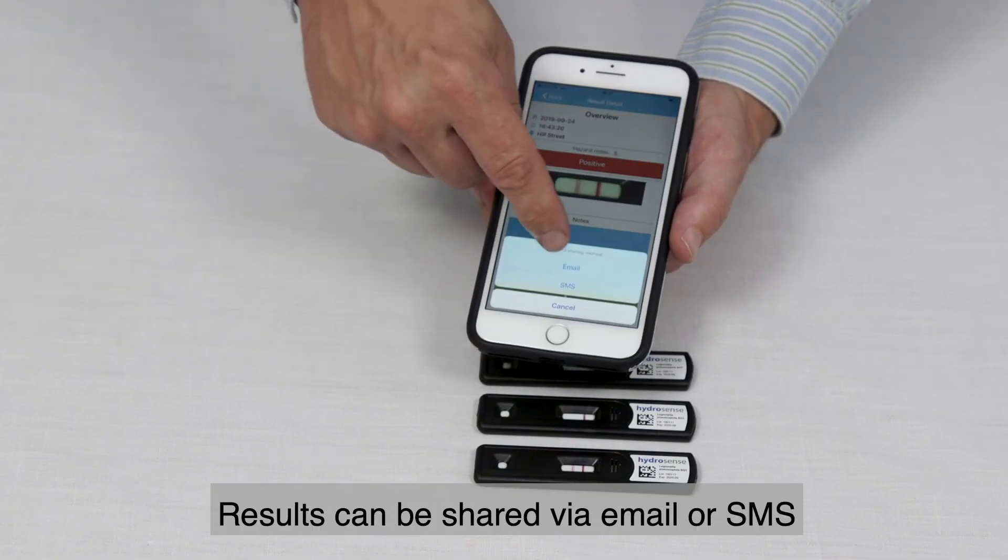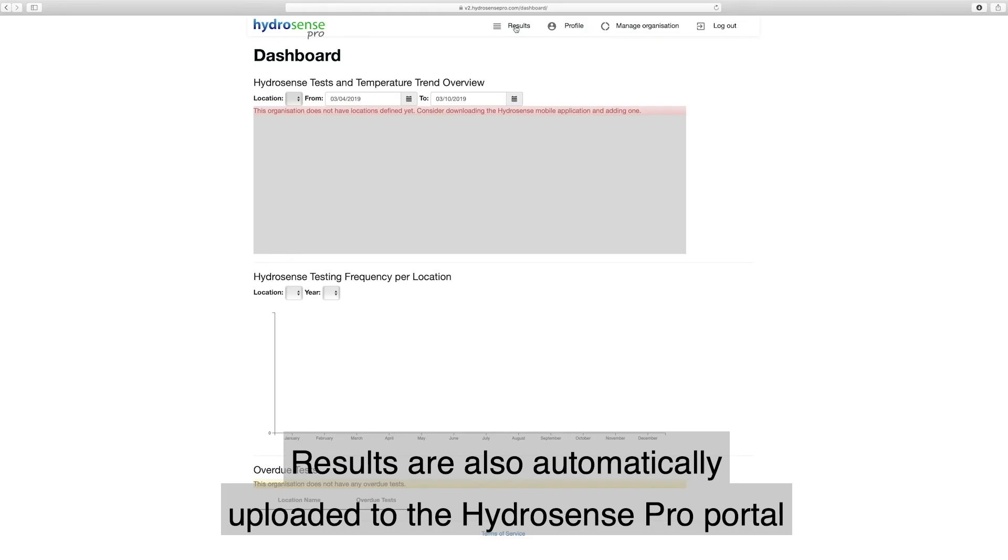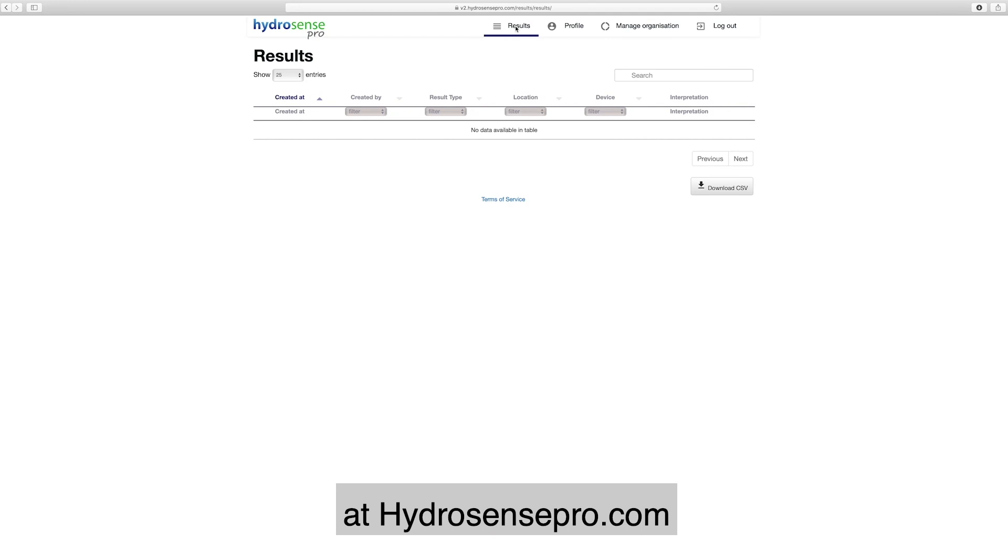The positive result indicates that Legionella pneumophila serogroup 1 has been detected in the sample. Results can be shared via email or SMS, or results are also automatically uploaded to the HydroSense Pro portal at HydroSensePro.com.